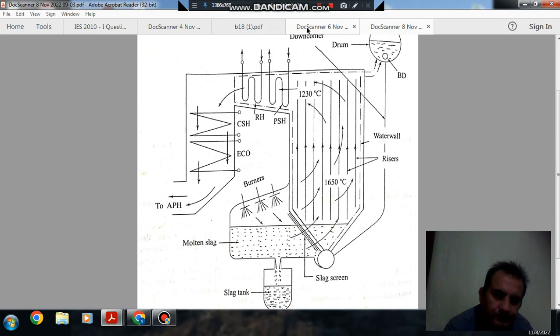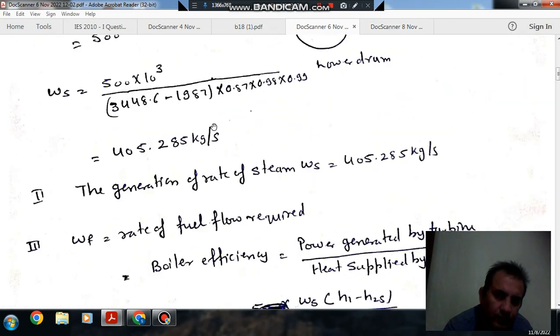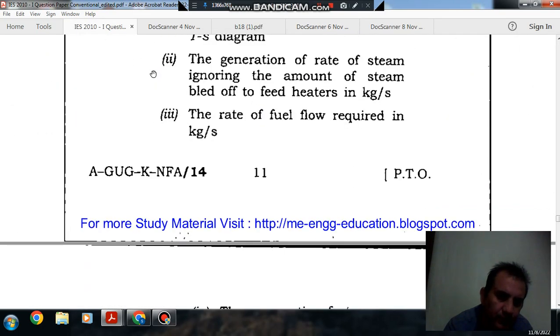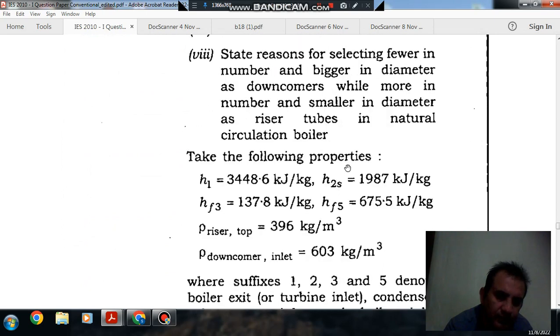And now we will calculate the other parts. So here, this is the T-S diagram. This is your boiler exit which is turbine inlet, condenser exit which is pump inlet and pump discharge. And enthalpy at 1 is given, that is 3448.6 and enthalpy at 2S is also given that is 1987 kJ per kg.